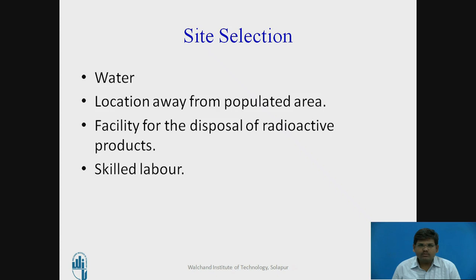Facilities for the disposal of radioactive products. After the fission process, there is generation of radioactive waste, which needs to be disposed perfectly and easily. So, there should be enough facility to dispose the radioactive products. For the operation of these kinds of plants, there should be skilled and trained labor, so that there are no dangerous events due to unskilled laborers.